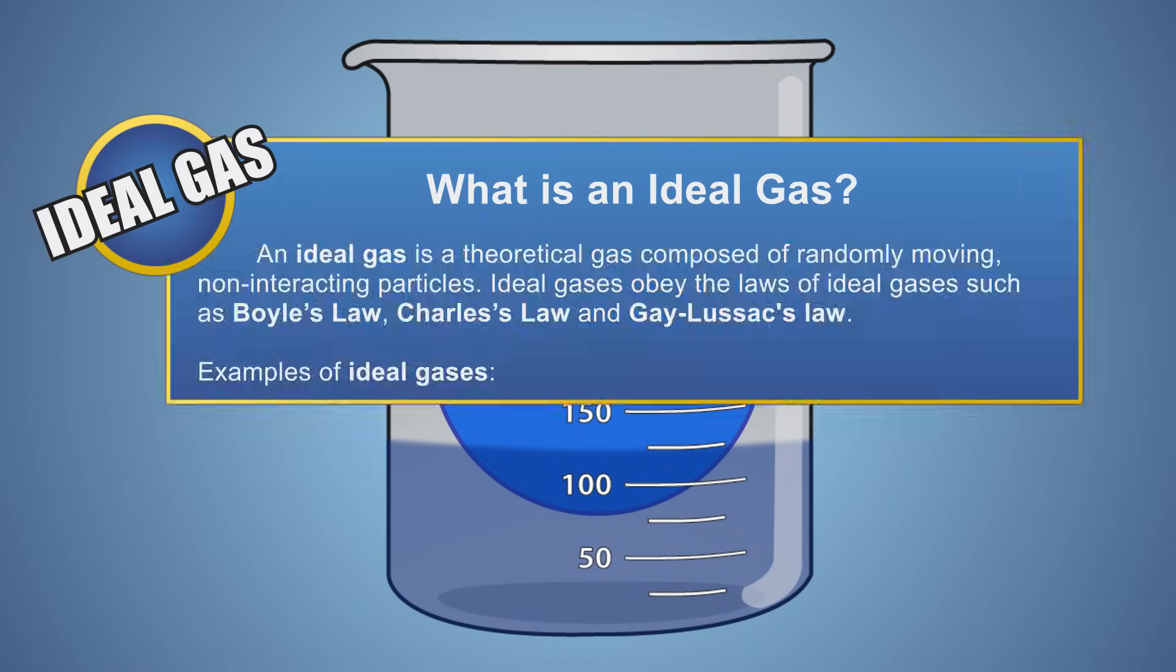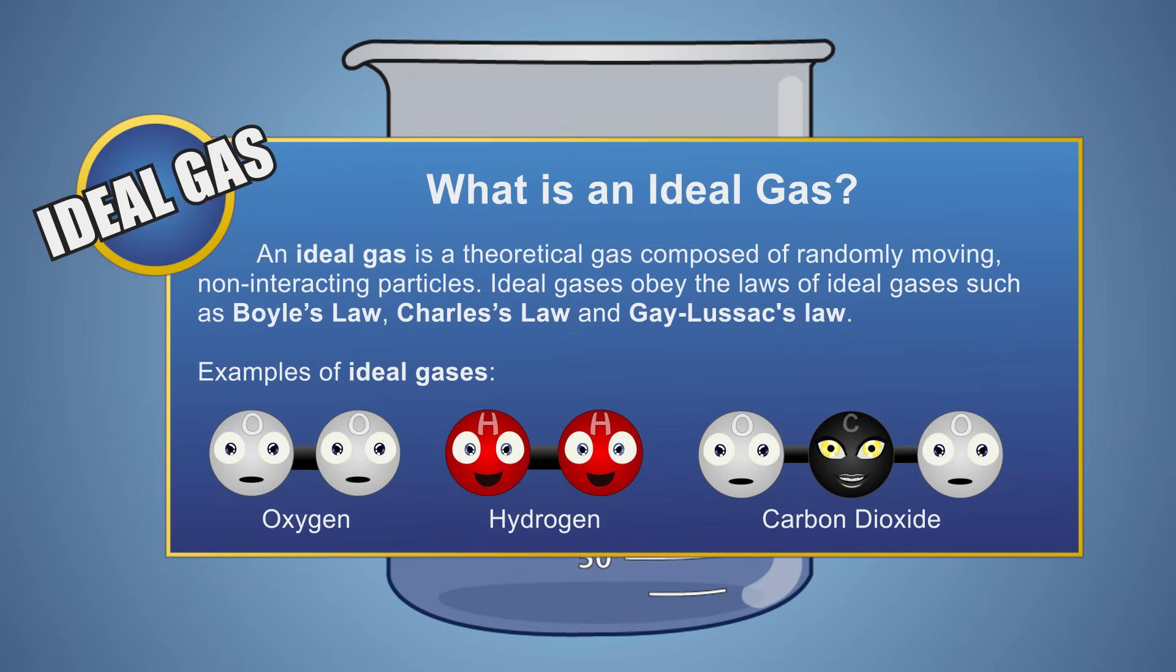As we mentioned in our last episode, an ideal gas is a theoretical gas composed of a set of randomly moving, non-interacting particles. Under normal conditions, many gases such as oxygen, hydrogen, and some heavier gases like carbon dioxide will behave like an ideal gas. This means they follow the laws of gases such as Charles Law.